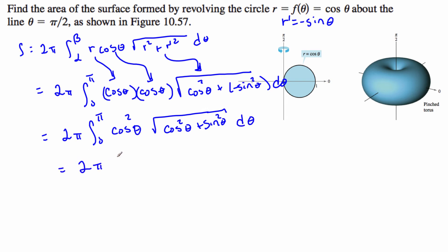So this is 2π, the integral from 0 to π of cos²(θ), times the square root of 1, which is just 1.